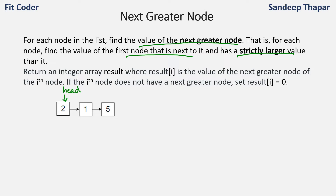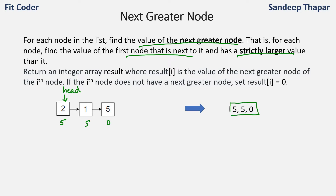Let's take a few examples to understand the problem. If we consider the first node 2, the value greater than 2 and to the right of 2 is 5. If we take 1, the value next to it which is greater than 1 is also 5. And if we consider the last node 5, there is no node which is next to it, so since there is no greater node, we will return 0. So the answer for this linked list will be [5, 5, 0].